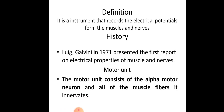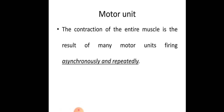The contraction of an entire muscle is the result of many motor units firing asynchronously and repeatedly. Motor units don't fire synchronously — for example, if five newtons of force is needed to lift something, only five motor units may fire, not all hundred motor units present in that muscle. When lifting a heavier object requiring a hundred newtons of force, you may require a hundred motor units to fire.